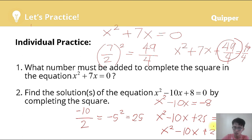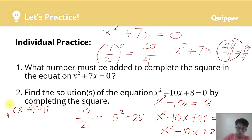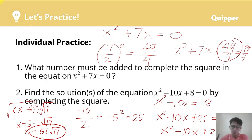So x² − 10x + 25 = 17. Expressing the left side as a binomial square: (x − 5)² = 17. Taking the square root of both sides: x − 5 = ±√17. Therefore x = 5 ± √17. These are the roots of the quadratic equation.